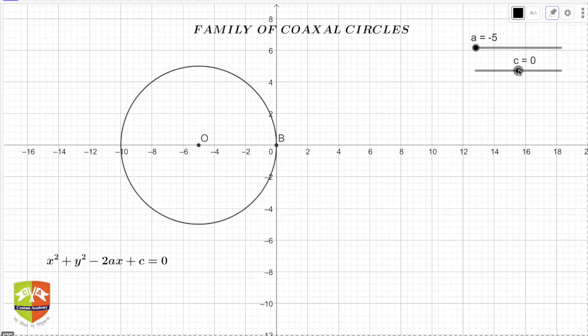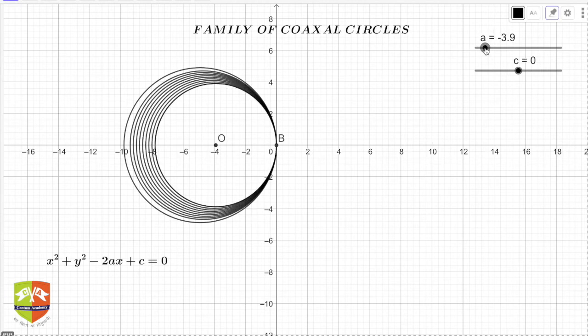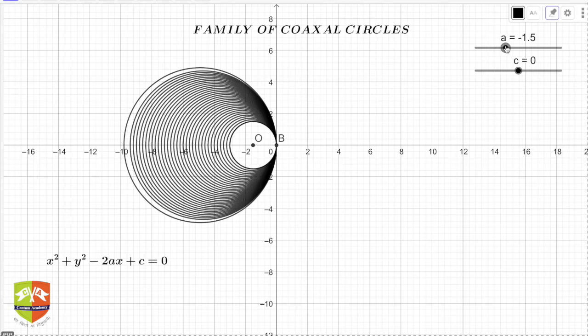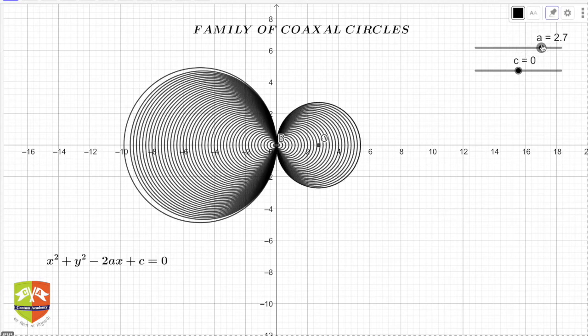When c equals 0, you can see the circle is tangent to the y-axis. Now what happens if I change the value of a? Right now a is -5. If you see, I am now changing the value of a, so you can see all these are coaxial circles. You can also monitor the position of center O, which now merges with the origin, and then these are the other sets.